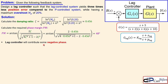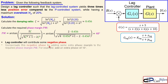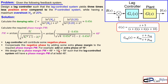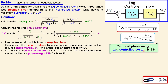We know that the lag controller will contribute some negative phase — maybe 3 or 4 degrees — so to compensate this we add some extra phase margin to the actual required phase margin. Let's add 10 degrees on top of the 48 degrees, giving 58 degrees, so the lag controlled system will definitely have at least 48 degrees. This phase safety margin is not a luxury; it is really mandatory. So the required phase margin for the lag control system is 48 plus 10 which is 58 degrees.